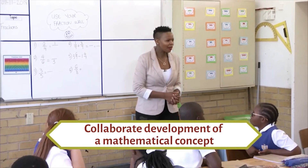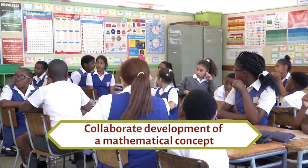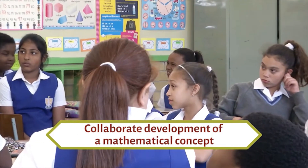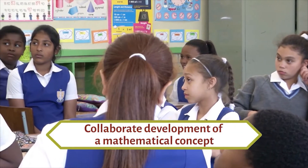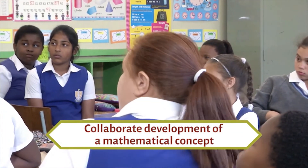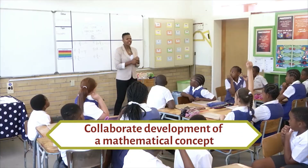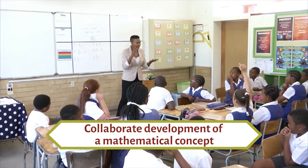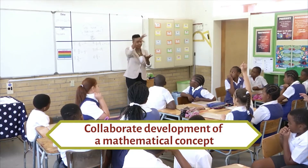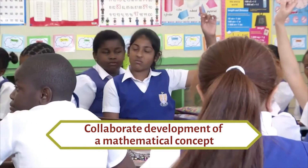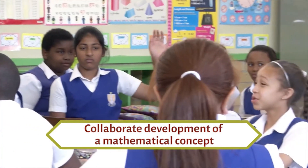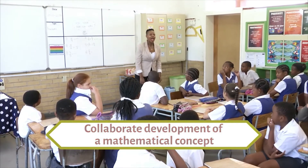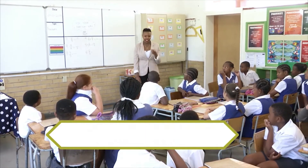Any specific things about fractions? Sanele? How many things are divided? Okay, so it's a whole that's divided into parts. That's correct. Any characteristics you can tell me about the parts that we divide a whole into? Shaylin? They're equal. Yes, they have to be equal.